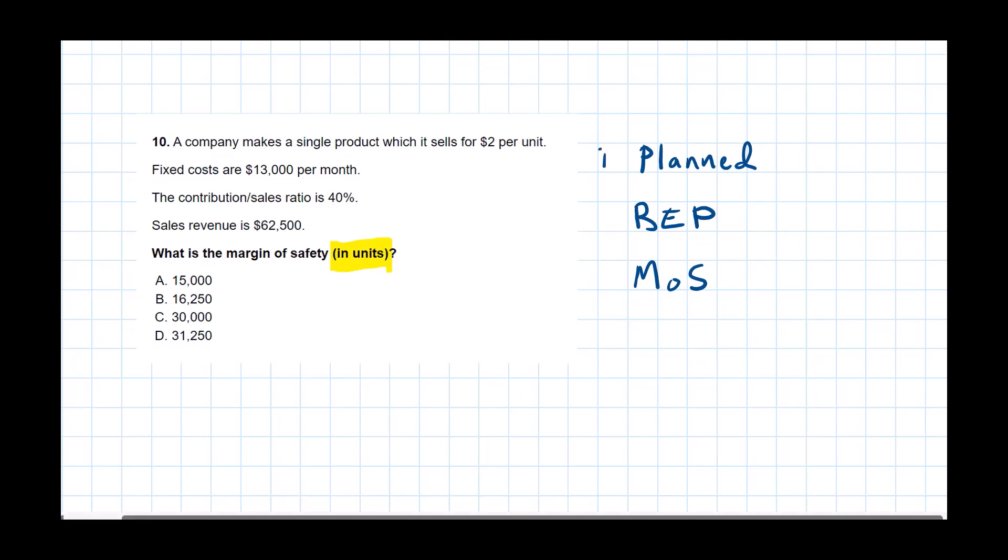So I've got several things to do before I can get to the final answer. I need to get the planned activity in units and then I also need to get a break-even point in units. So I see right now we've got sales revenue is $62,500. And they tell us that the selling price is $2. The company makes a single product, which it sells for $2. So at this point, I can get the sales revenue, the planned activity level in units. And that would be the $62,500 divided by $2 a unit. And that's going to give me $31,250 units.